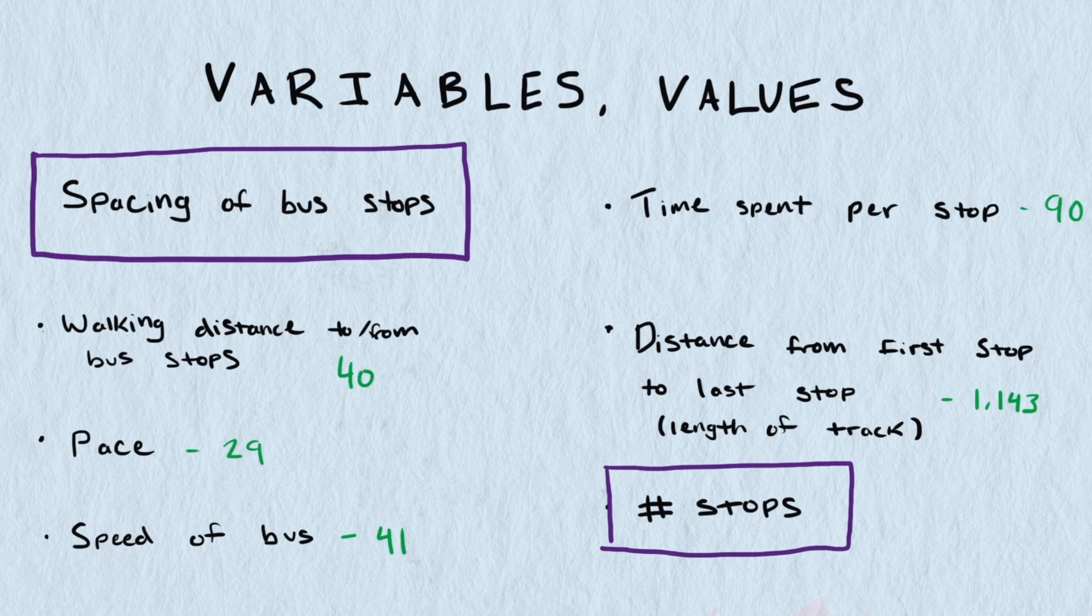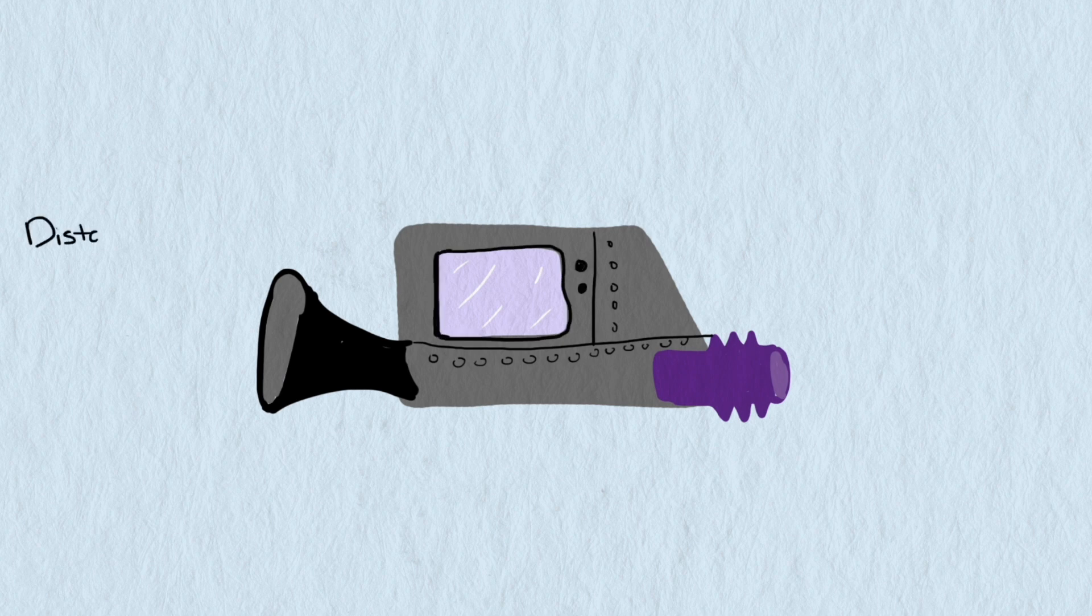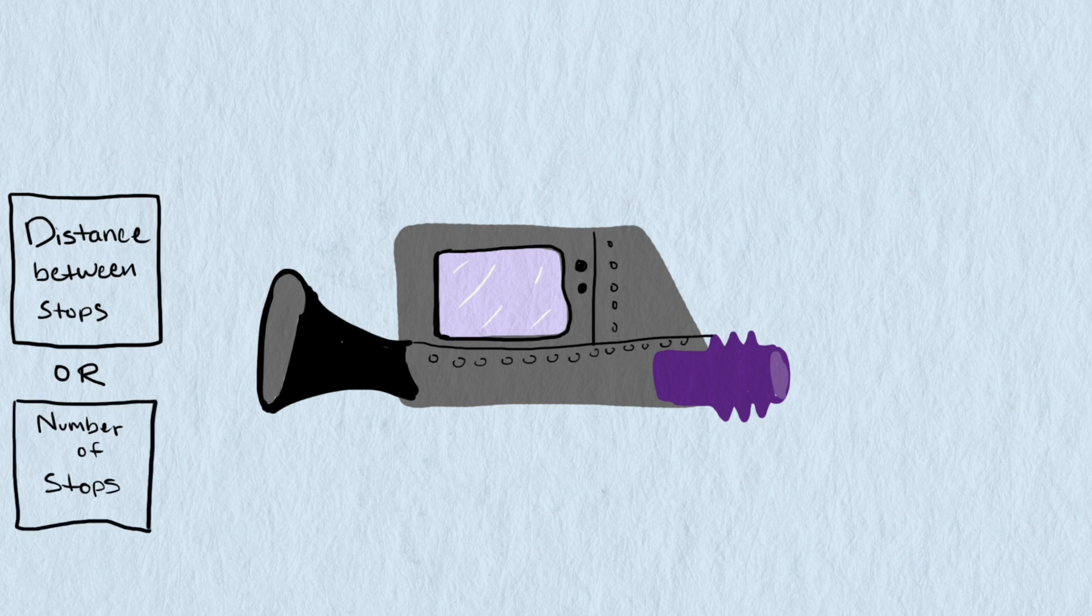Already our thinking about variables gives us a hint about the model we want to develop. We want a function that takes in either the distance between stops or alternatively the number of bus stops and gives out the travel time. We need to decide whether to use the distance between stops or the number of stops as our input variable.